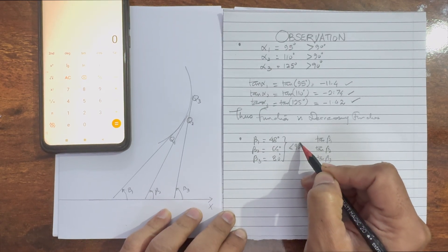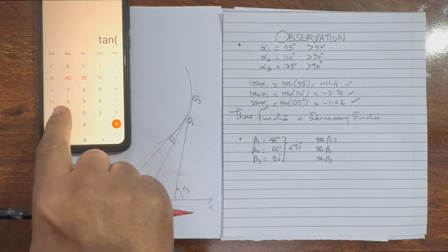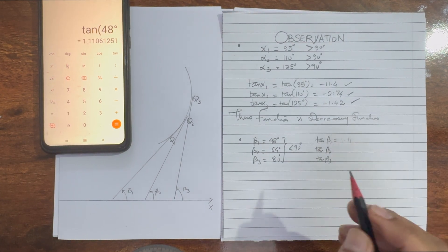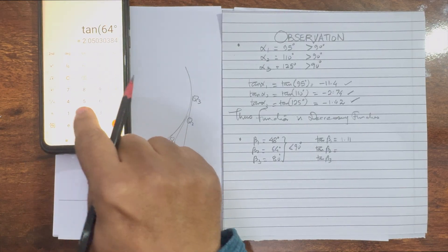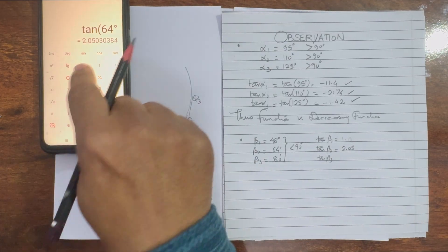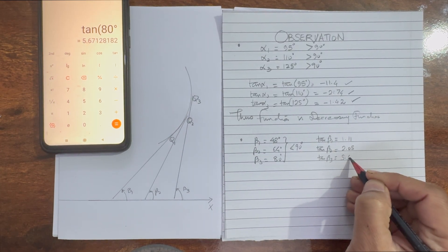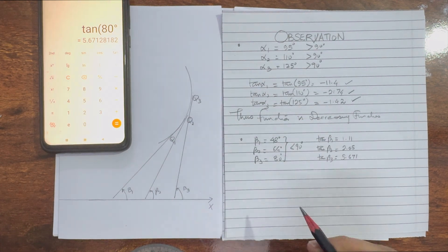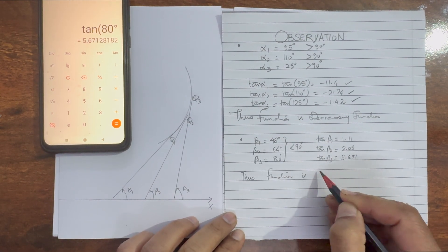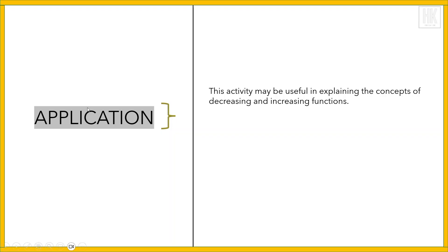Now we will calculate tan beta 1, tan beta 2, and tan beta 3. All the angles are less than 90 degrees, so these are acute angles. Tan beta 1, which is tan 48°, equals 1.11. Tan beta 2, which is tan 64°, equals 2.05. And tan 80° equals 5.71. The values are increasing, so we can say this function is an increasing function. This activity may be useful in explaining the concept of increasing and decreasing functions.